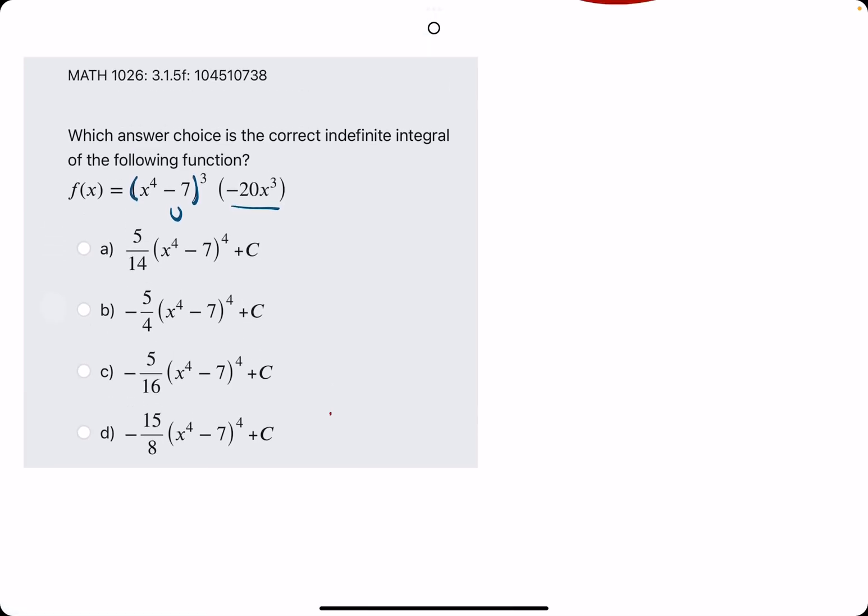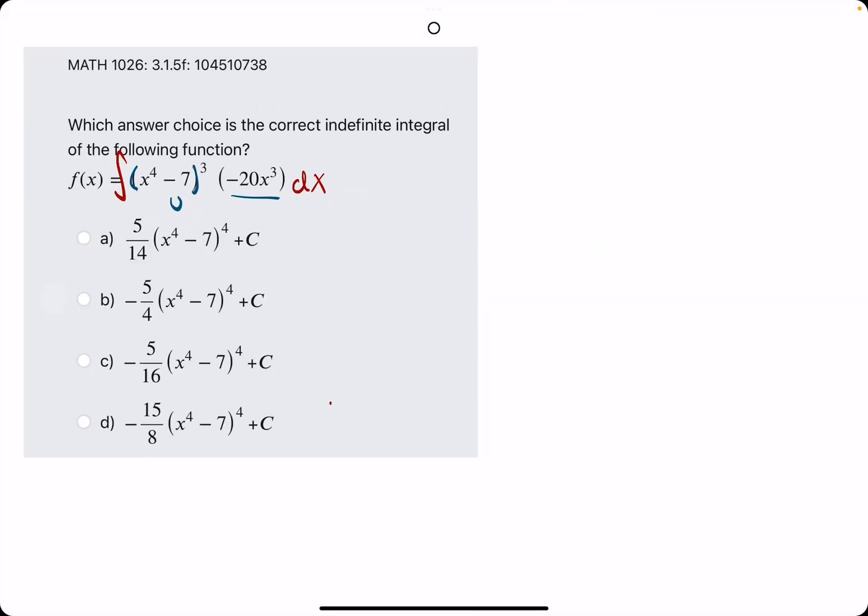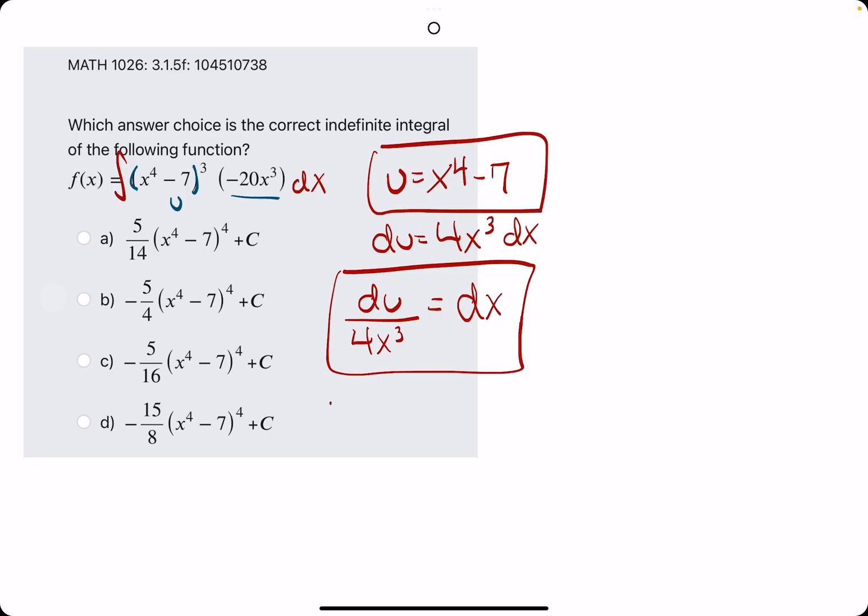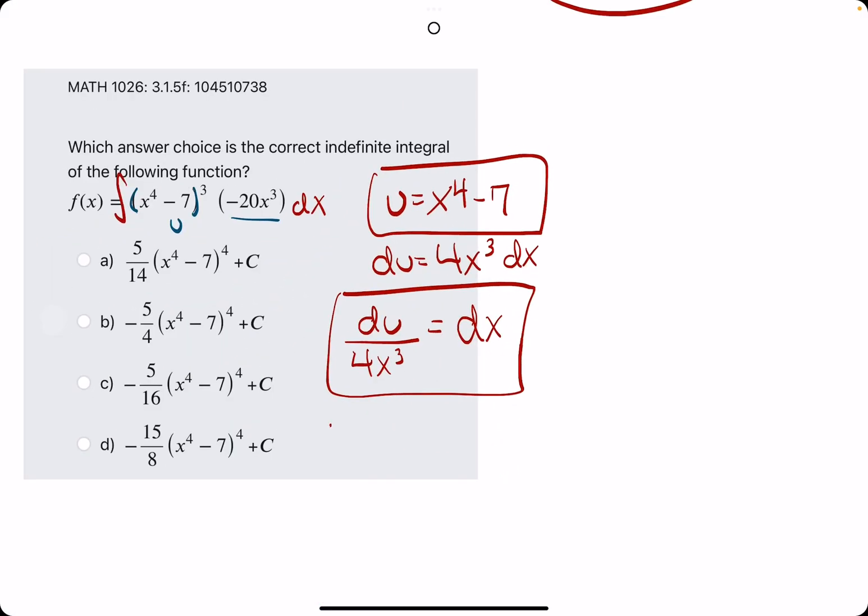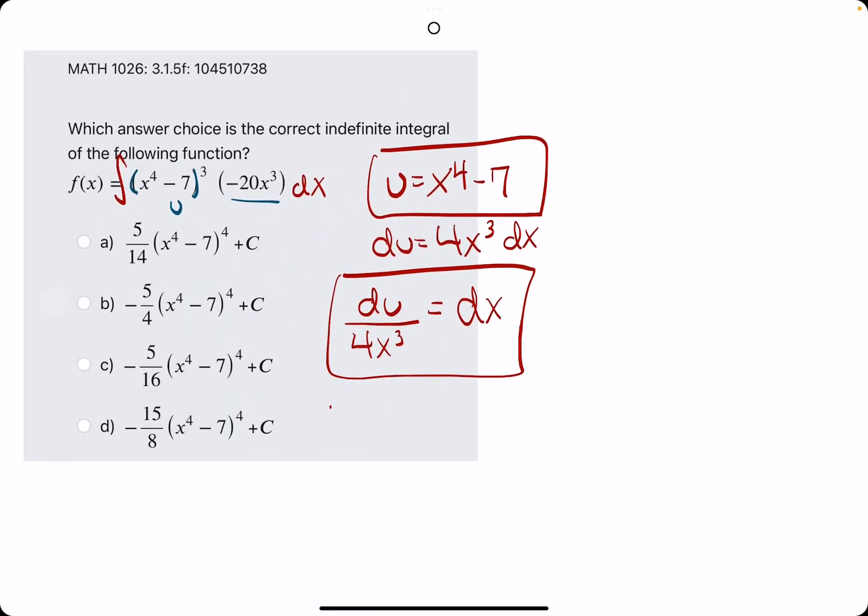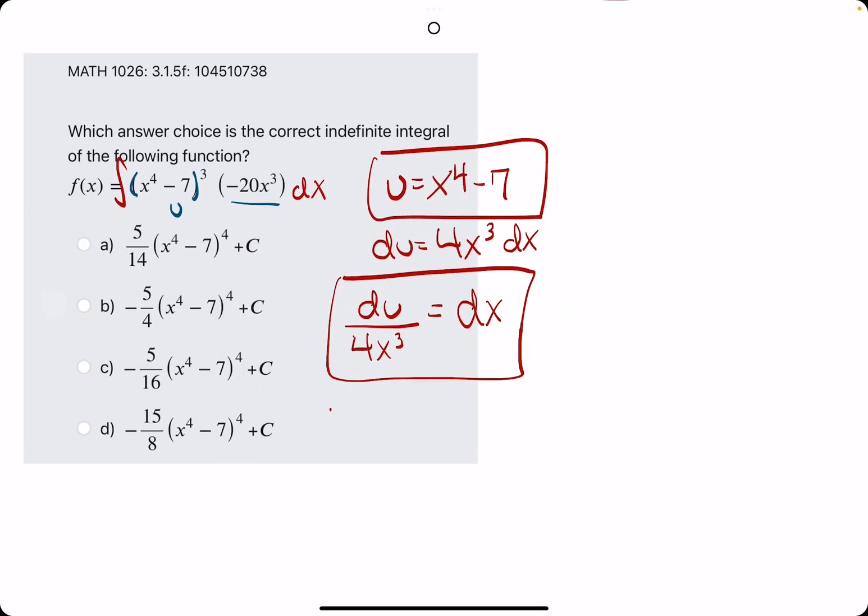See how fast we can do this one. I'm going to set this up as an integral. We will find u: x to the 4th minus 7 is on the inside, being raised to the 3rd. Let's take its derivative: 4x cubed. Tack on dx. We're going to solve for dx by dividing du by 4x cubed.